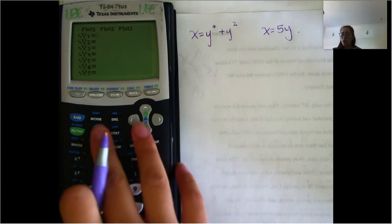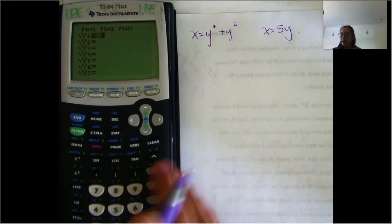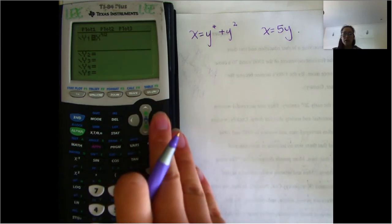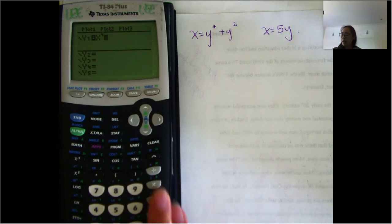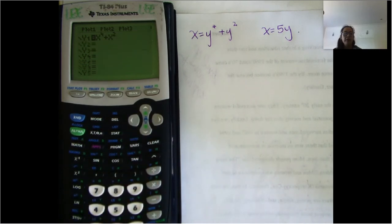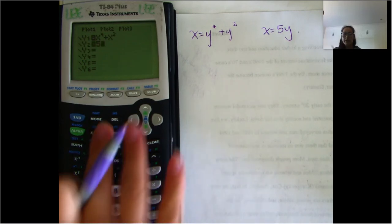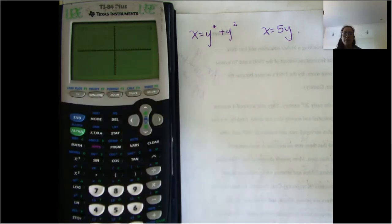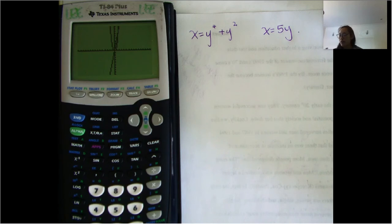So over here I'm going to do y equals x to the fourth plus x squared, and then over here y equals 5x. When we graph it, it's basically going to give us a look at the same graph but in terms of x instead.